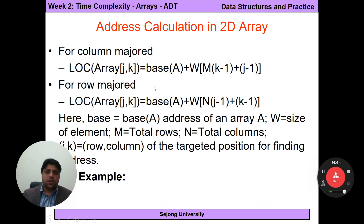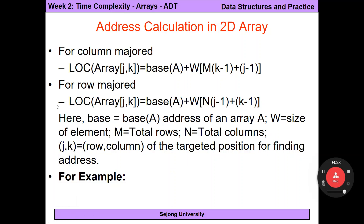To calculate the address of an element in a 2D array, the formula uses: the base address of the array (starting address), W which is the size of each element, M as the total number of rows, N as the total number of columns, and (j, k) representing the current target row and column.